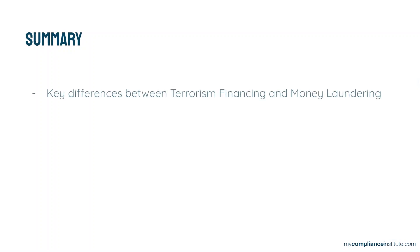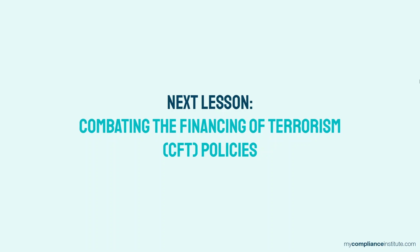To summarize, in this lesson we discussed four main differences between money laundering and terrorism financing. While the two may look similar, there are differences with respect to how they are characterized, their main objective, how it is done, and the source of money. In our next lesson, we will discuss the CFT policy in detail.